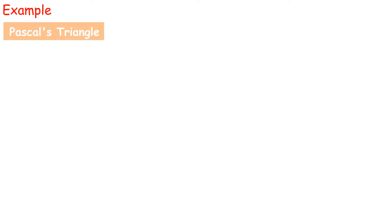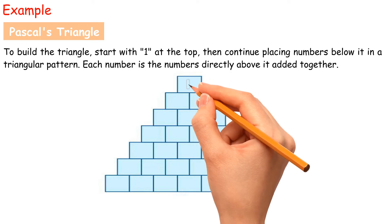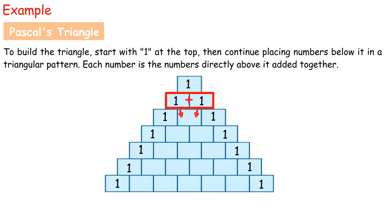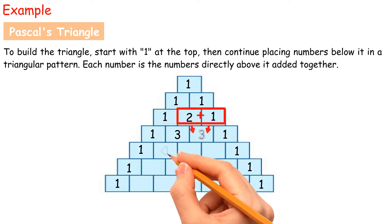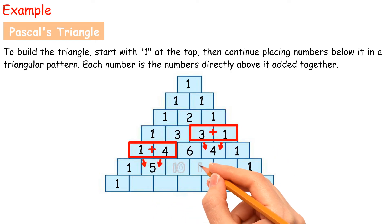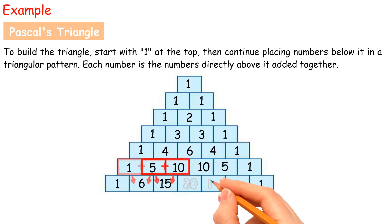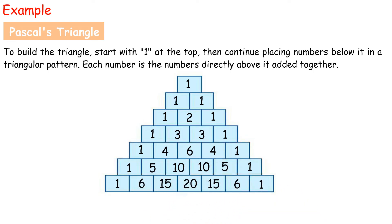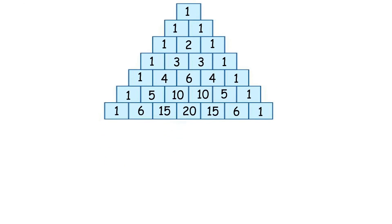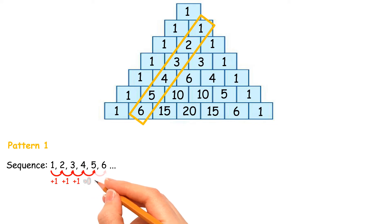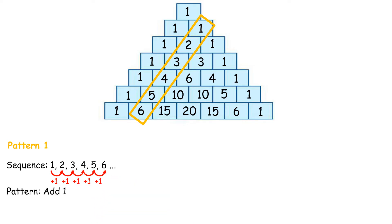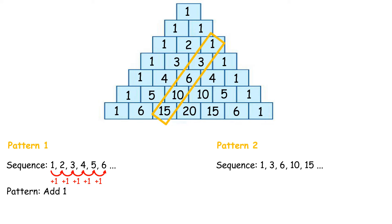Pascal's Triangle: Start with one at the top, then continue placing numbers below it in a triangular pattern. Each number is the sum of the numbers directly above it added together. There are some patterns that can be found. Pattern 1: Sequence 1, 2, 3, 4, 5, 6 — pattern: add 1. Pattern 2: Sequence 1, 3, 6, 10, 15 — pattern: add 2, 3, 4, 5.